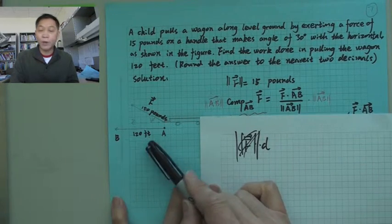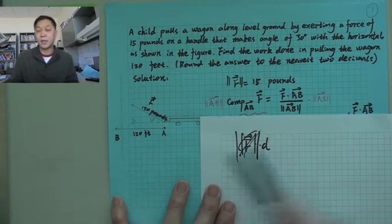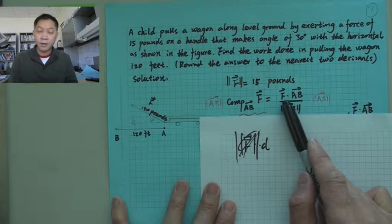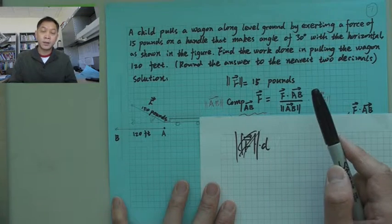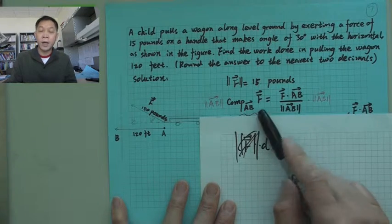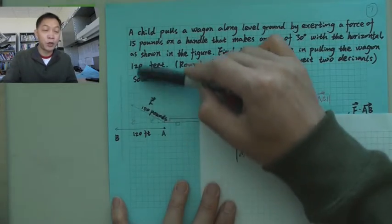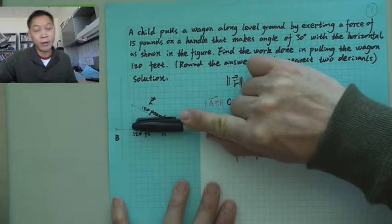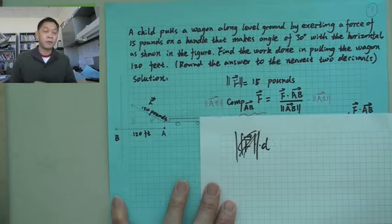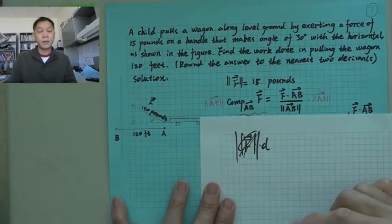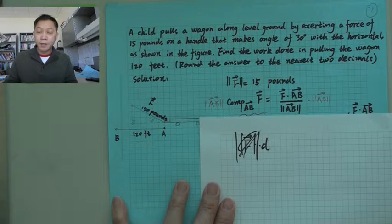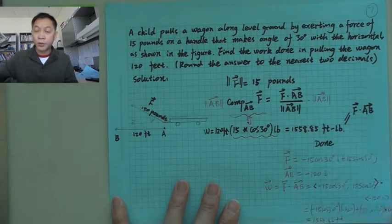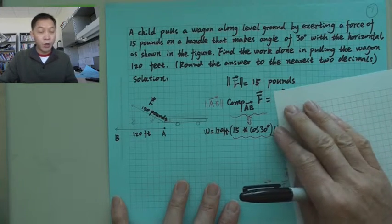The magnitude of AB is 120, and its direction is horizontal. The formula for work involves F dot AB. We don't actually need to use that full formula here because we already know the angle is 30 degrees.